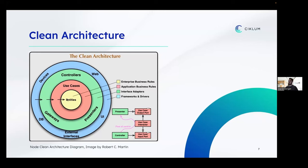Starting with entities: as specified, it contains the enterprise business rules. It should contain your business objects — represented as a class or an interface — something like a user, a book, a product. It's an object likely to change whenever there's a new business requirement. Be careful: this is not the database layer. The database actually resides further out; entities just contain the enterprise business rules that the database is going to implement.